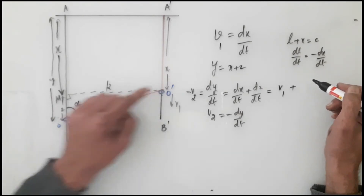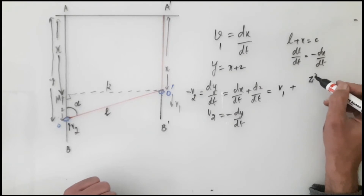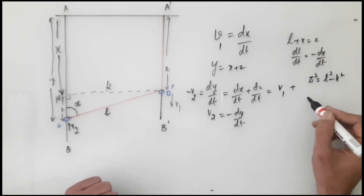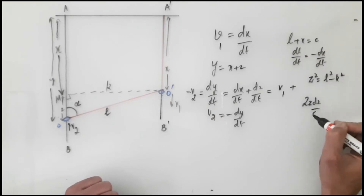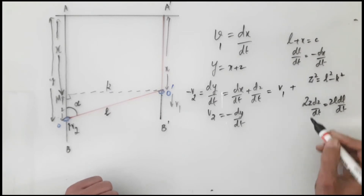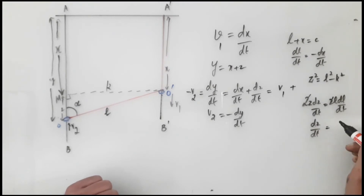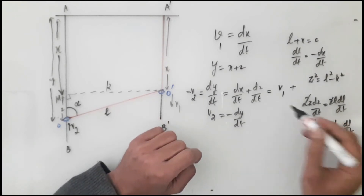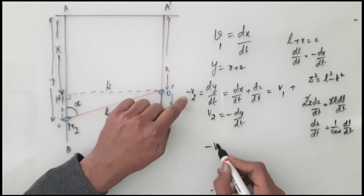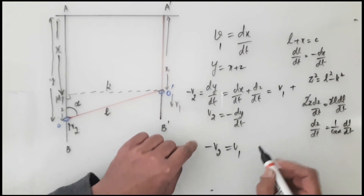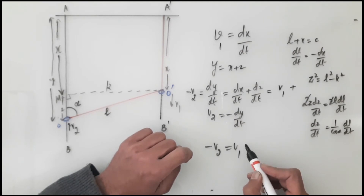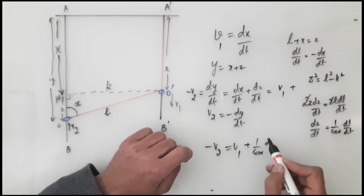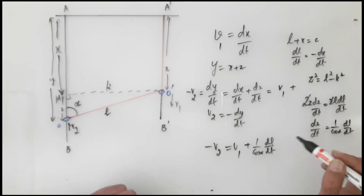From this triangle, we write z² = l² − k². Differentiating both sides with respect to time, the 2s cancel from both sides. Then dz/dt: l upon z is simply 1/cos α. So this helps us write dz/dt in terms of dl/dt. Rewriting the main equation: −v2 on one side, v1 on the other, and dz/dt equals (1/cos α)·(dl/dt).